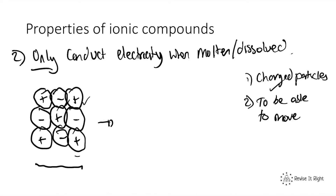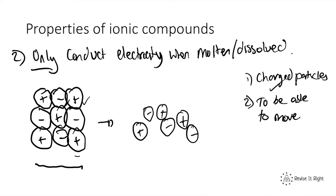However, if we were to melt this giant ionic structure — if we were to melt it — the particles become molten. Going back to our checklist: does it have charged particles? Yes. Are these now able to move? Yes — we know that particles within liquids are more free to move. Therefore, they can carry that charge and conduct electricity. When ionic compounds are melted from solid to liquid, they can conduct electricity.